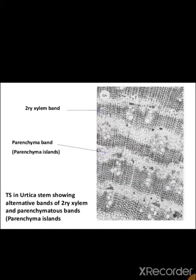These transverse sections clearly explain the alternating bands of secondary xylem and parenchymatous bands visible in the Aristolochia stem.